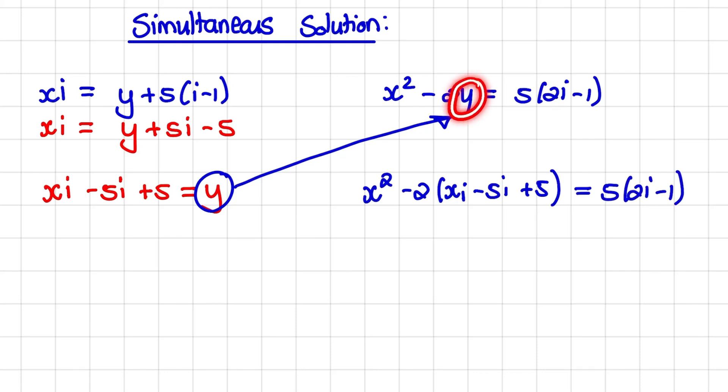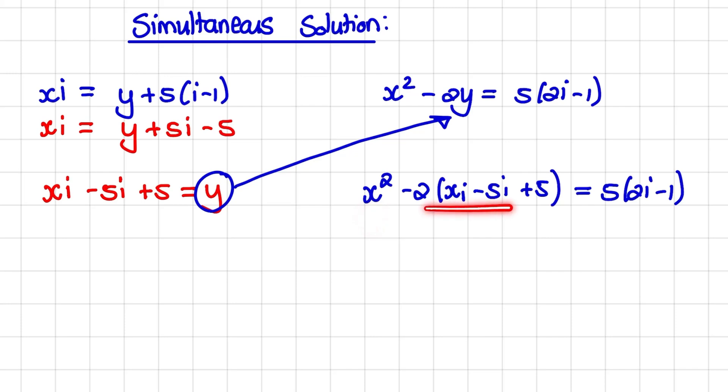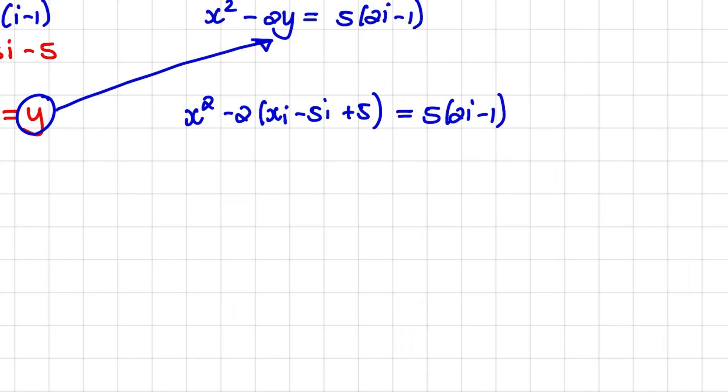Notice that y is replaced with the expression for y when we rewrote our first equation. Now the only variable that I have in this new equation is x. So I can multiply out and solve for x. So when I expand, I have x squared minus 2xi plus 10i. Remember the sign change when we multiply negative 2 with negative 5.